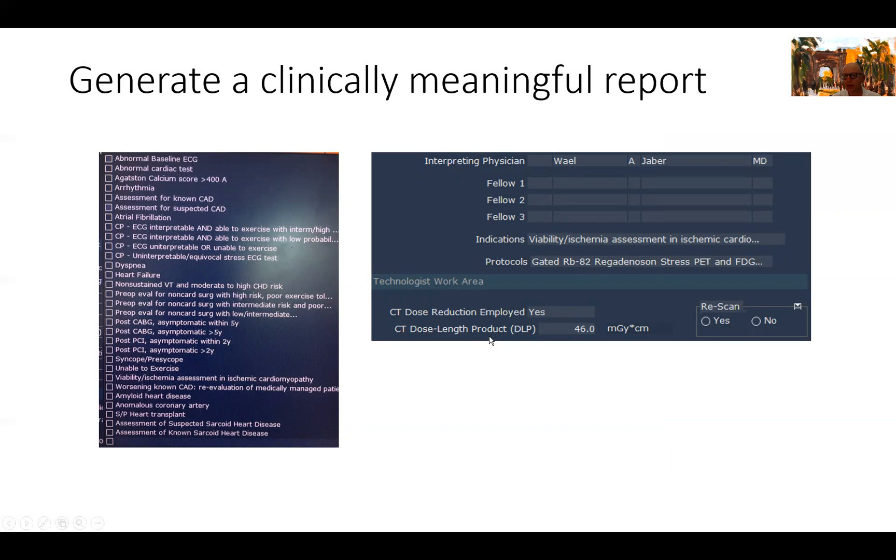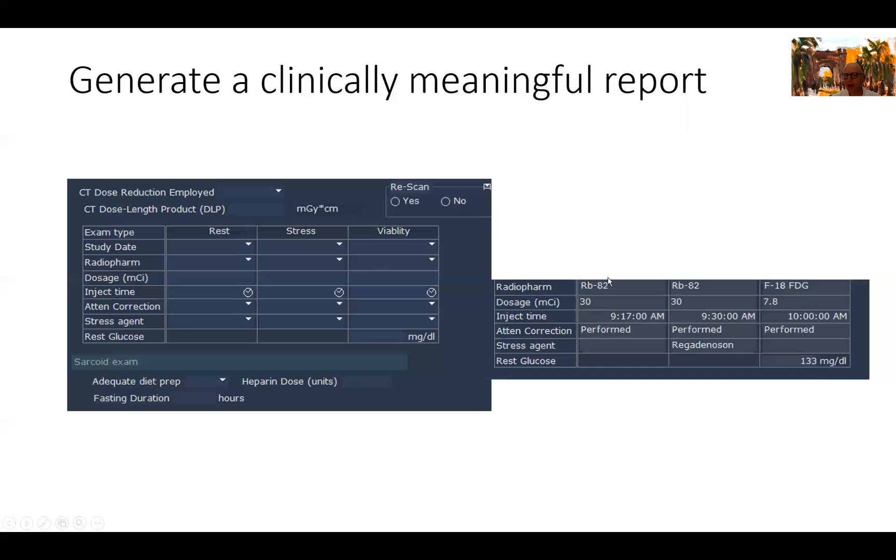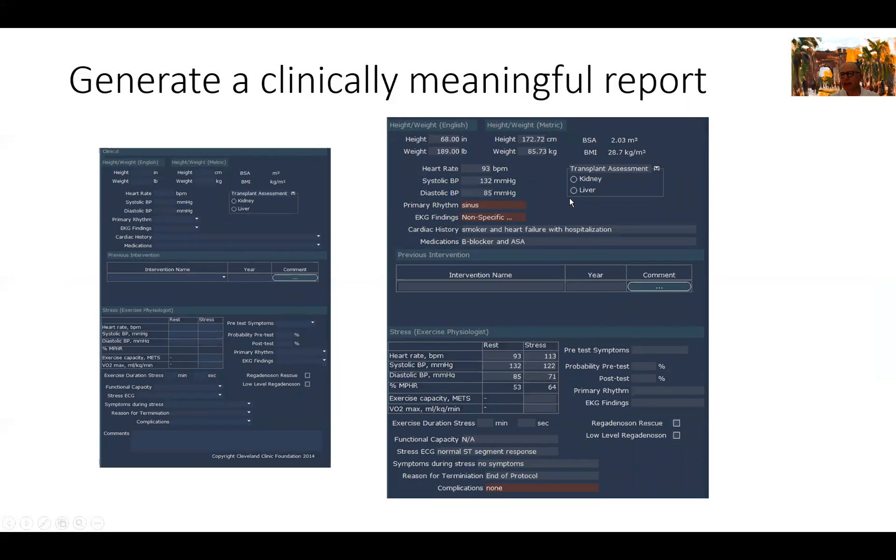Now we go to report the study. We have to report the indication for the study right here, as you can see. Then we report what type of test we did and we report the radiation dose given. In this instance, the DLP is 46 for this patient. We report the dose given, the rubidium stress and what dose of FDG, and what was the blood sugar at time of FDG image acquisition. Some clinical data about the patient: height, weight, BMI, blood pressure, medications, prior cardiac or prior history, whether they have a CABG, PCI, pacemakers, valve surgeries, any of these other issues.